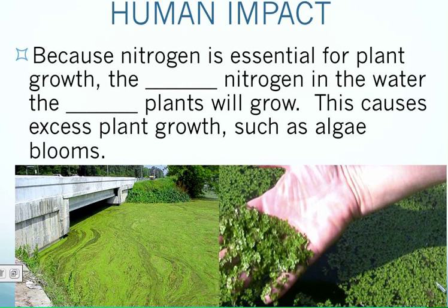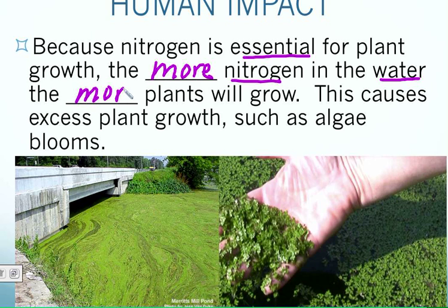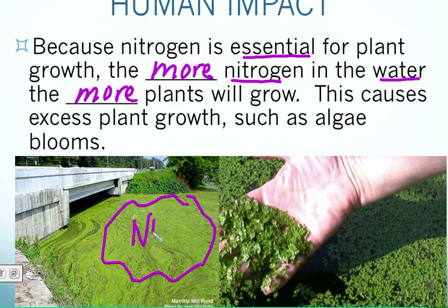We've seen this scene before — all that algae hanging out in ponds. What's happening is nitrogen, being essential for growth, causes plants to grow more. The more nitrogen in a water environment, the more the plants will grow. So here we have this pond with all this algae because there's an abundance of nitrates, and we get an algae bloom where those plants are eating up all that nitrogen they can.